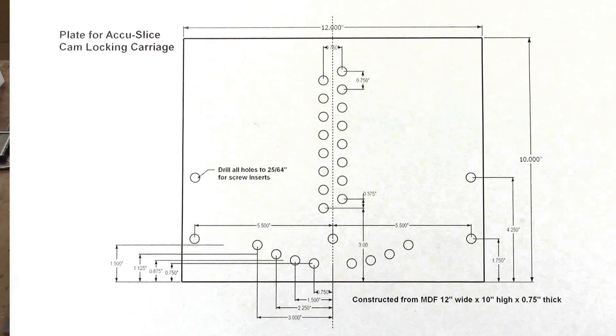I designed the holes in the backing plate to enable the slicing of discs from one-and-a-half-inch in diameter up to six inches in diameter. Each of the holes was drilled using a twenty-five sixty-fourth-inch drill bit to enable the attachment of quarter-inch by twenty threads-per-inch brass screw inserts. These inserts are available from McMaster Carr.